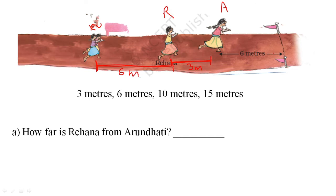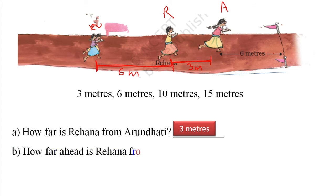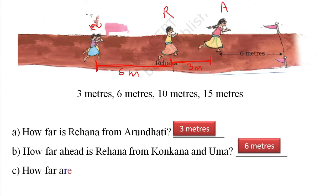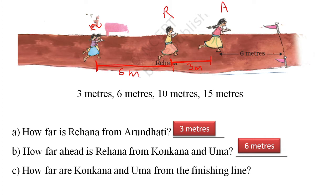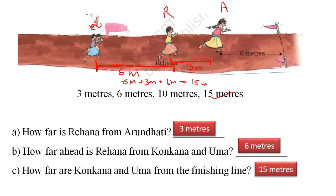Summary of answers: How far is Rehana from Arundhati? 3 meters. How far ahead is Rehana from Konkana and Uma? 6 meters. How far are Konkana and Uma from the finishing line? That is 6 meters plus 3 meters plus 6 meters — 6 plus 3 is 9, plus 6 is 15 meters.